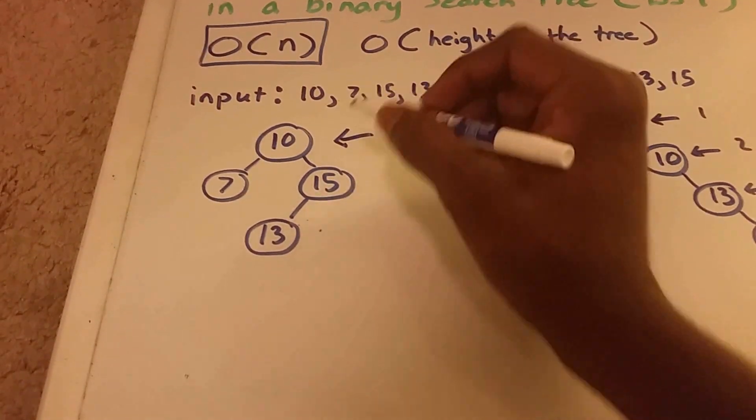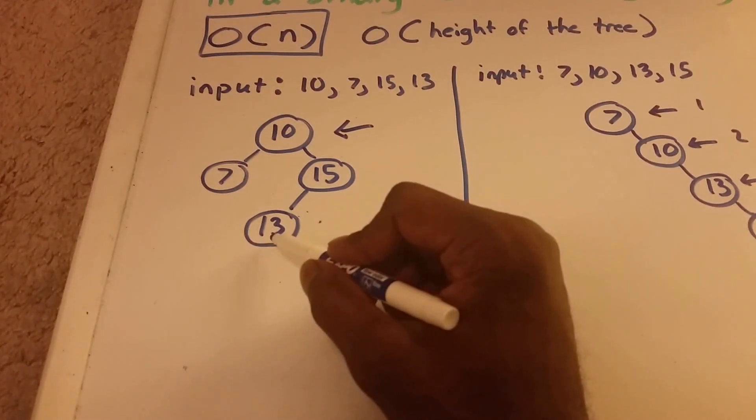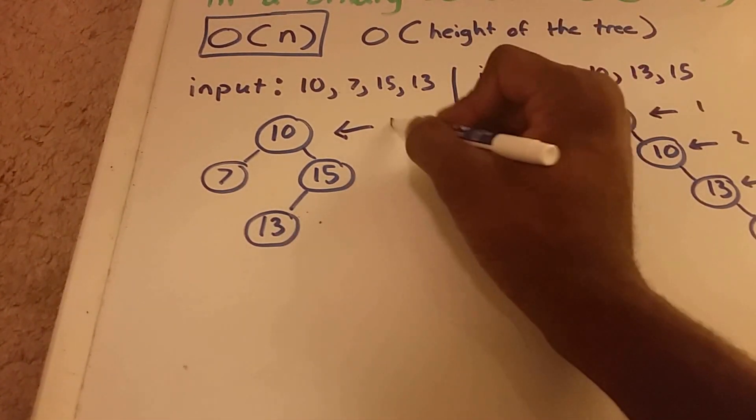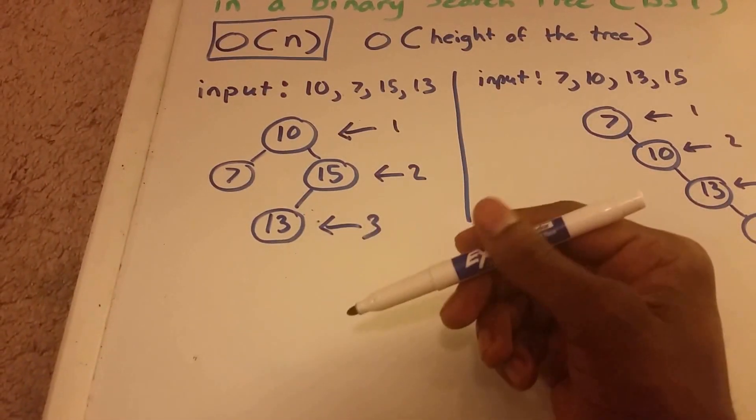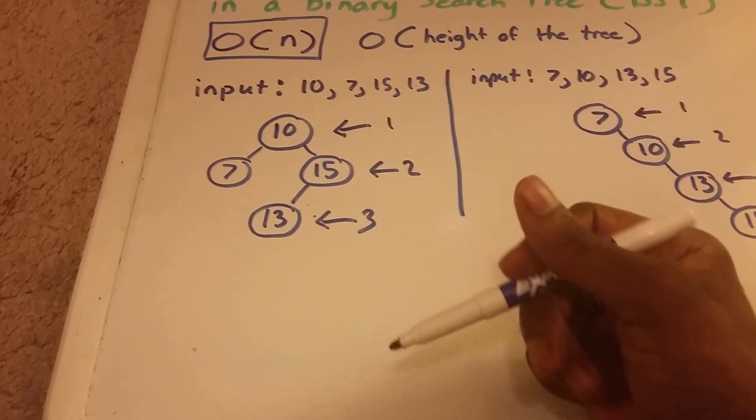And here, we only have to go, worst case, to the number 13. And that's 1, 2, 3. That's only down the tree, 3 heights.